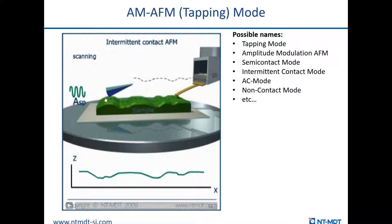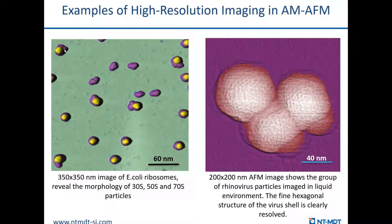The tip comes to the surface and the damping of the amplitude corresponds to some force interaction. We try to keep this force interaction constant while scanning the sample, and thus we can get the morphology or topography of the sample. There are examples of how AFM is used to get morphological information. First, high-resolution imaging — on this slide you can see ribosomes, which are pretty tiny; the size of the whole image is 350 nanometers, which is fairly close to the limit of optical microscopy.